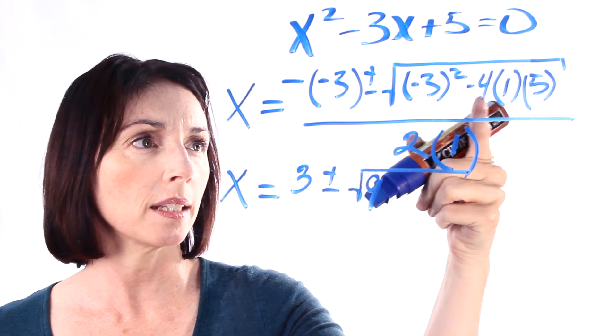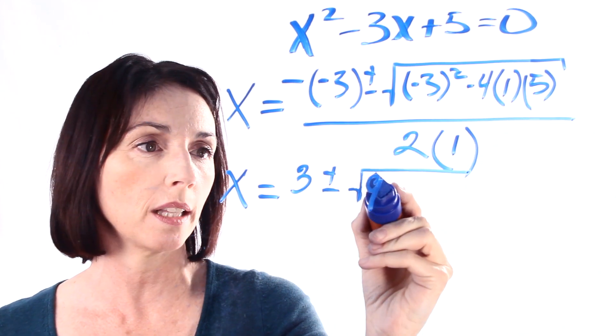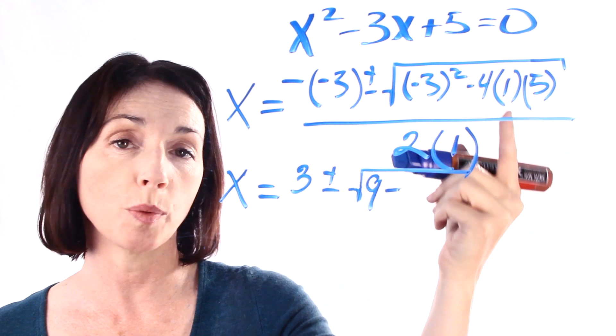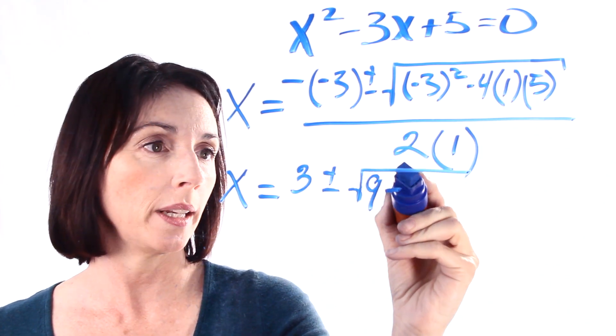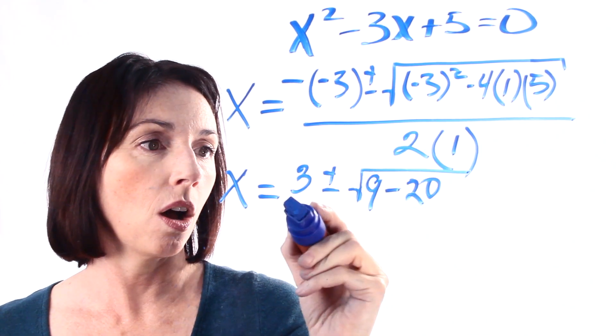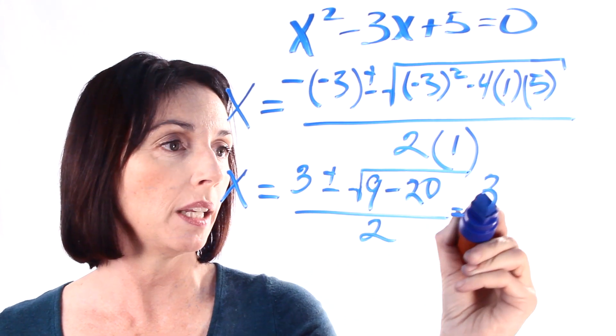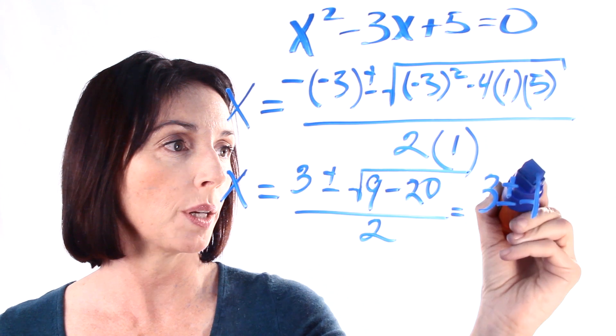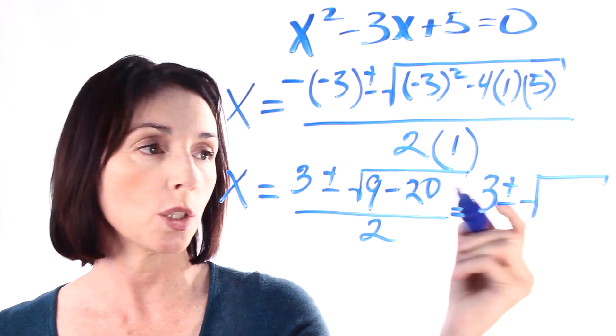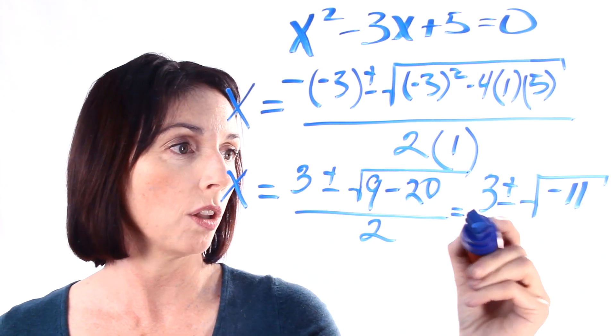Now here we have a minus, and this is a plus, and this is a plus, so we're going to still have a minus. 5 times 1 is 5, 5 times 4 is 20. All of that over 2 times 1, which is just 2. So we have 3 plus or minus the square root of 9 minus 20 is negative 11, all over 2.